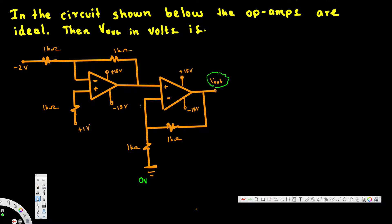In this problem, we have a circuit with op-amps that are ideal, and the question is asking us to find V_out in volts.